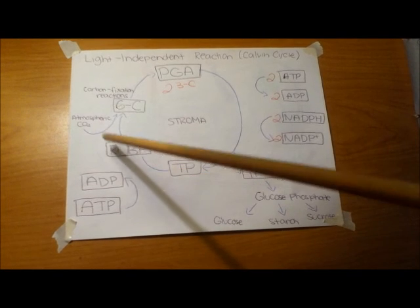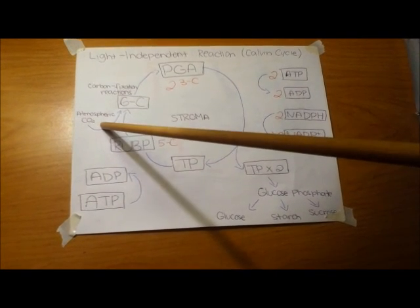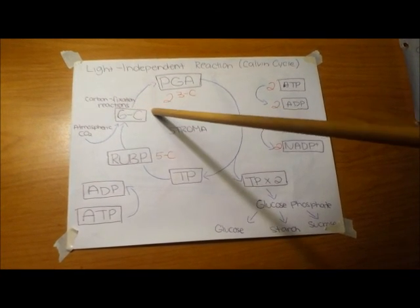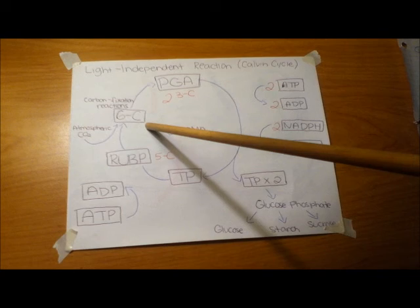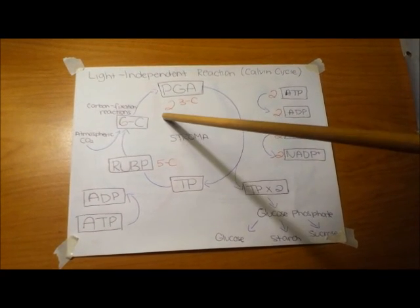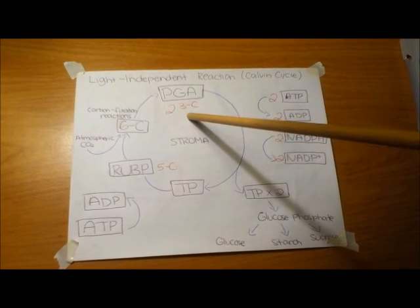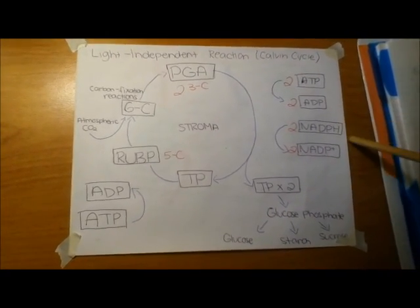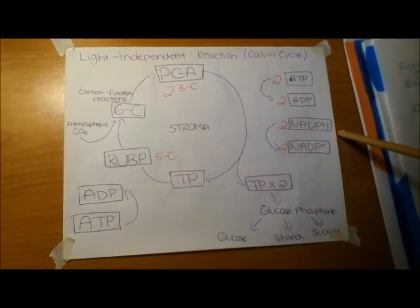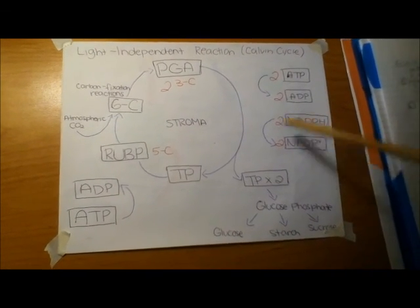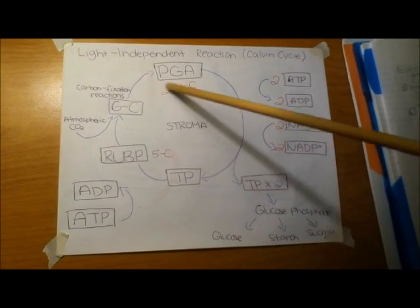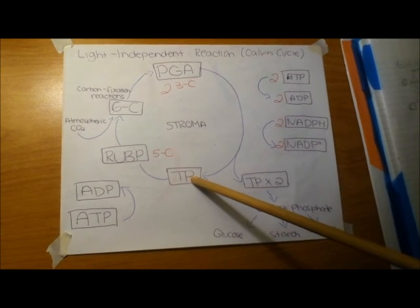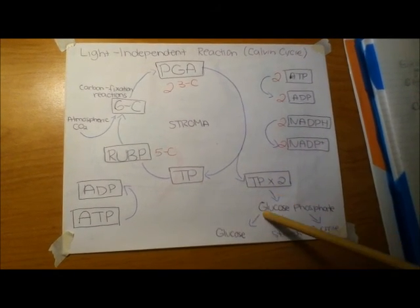RuBP gets fixed with carbon dioxide that comes from the atmosphere, and this results in a six-carbon sugar that is unstable. To make it stable, the six-carbon molecule breaks up into two three-carbon compounds called PGA. Next, ATP donates the phosphate and NADPH donates a hydrogen electron to form two new three-carbon compounds called triose phosphate. After the cycle has gone around six times, there will be a formation of 12 triose phosphates, and 2 triose phosphates are used to make glucose.